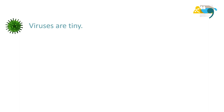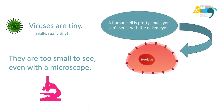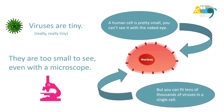Viruses are tiny. Really, really tiny. They're too small to see, even with a microscope. A human cell is pretty small — you can't see it with the naked eye — but you can fit tens of thousands of viruses in a single human cell.